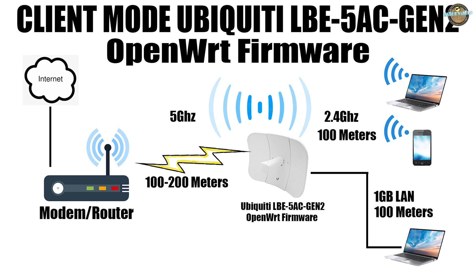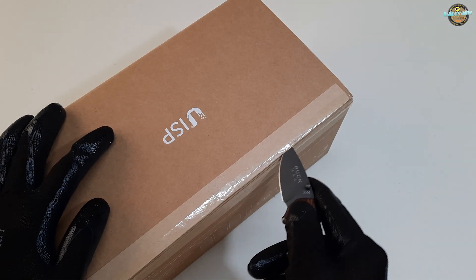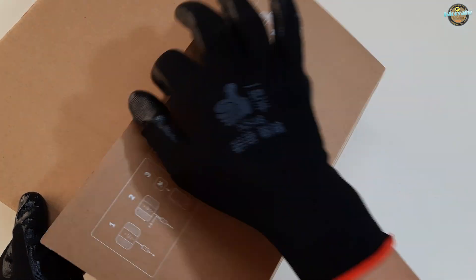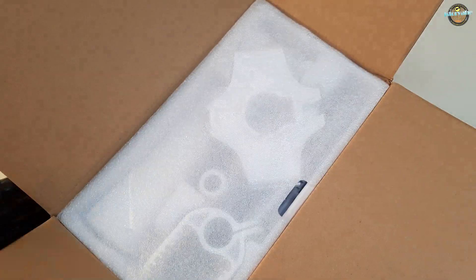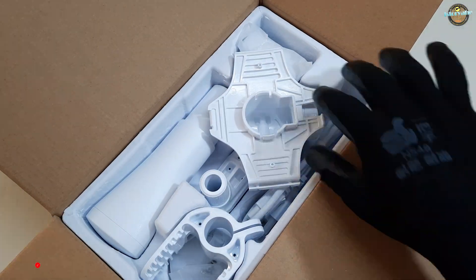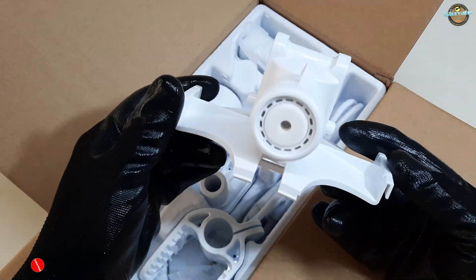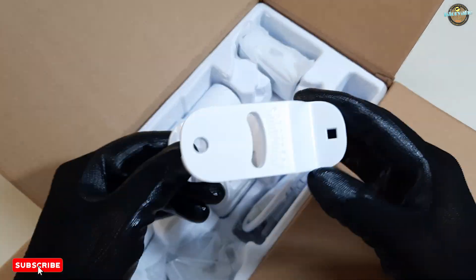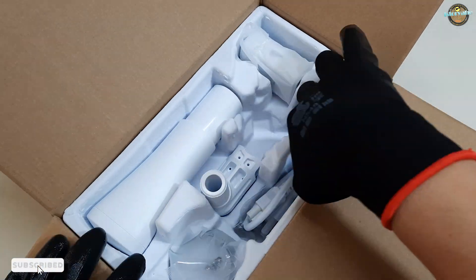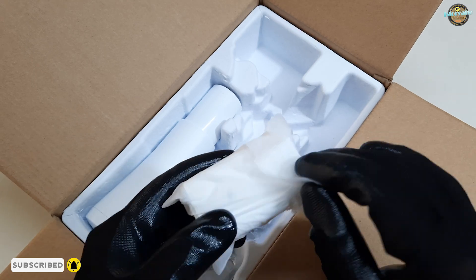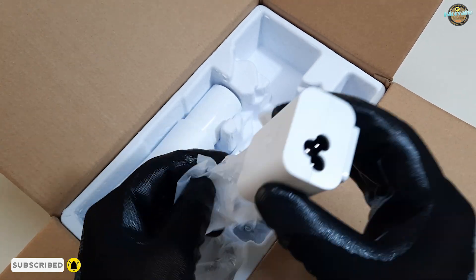Hello and welcome to this video where I'll show you how to configure your Ubiquiti Lightbeam 5 AC Generation 2 with OpenWRT firmware. With OpenWRT, you can easily set up your device to work in dual band mode, allowing for more flexibility and customization.